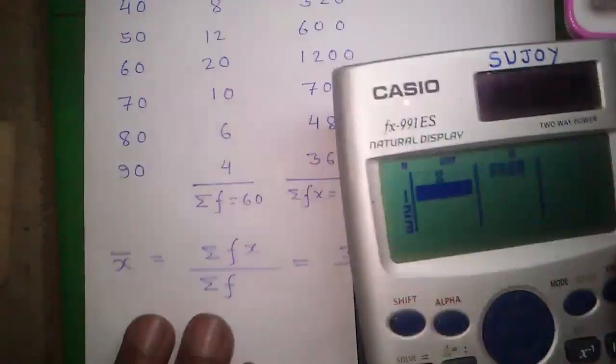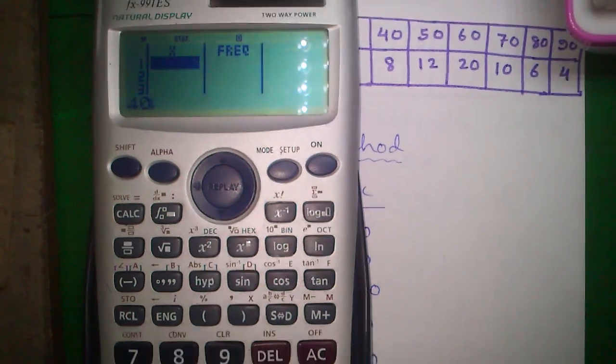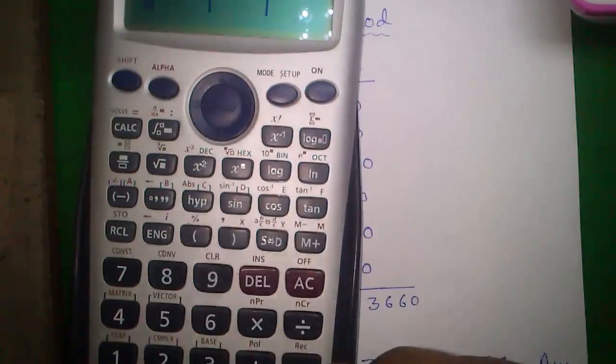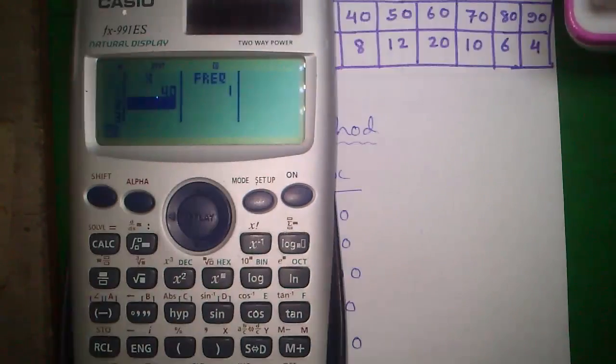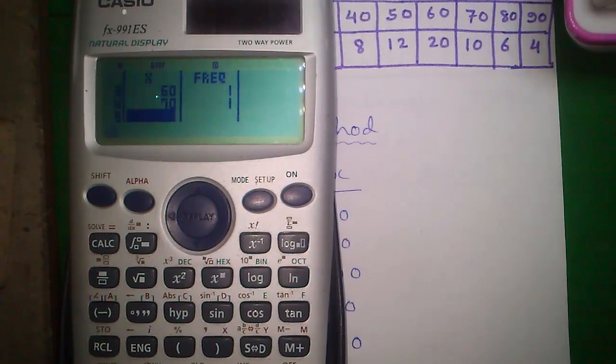Next enter the data. First enter all X data: 40. To enter any data, type the number and press equals to button. It will be entered. 50, 60, 70, 80, 90.